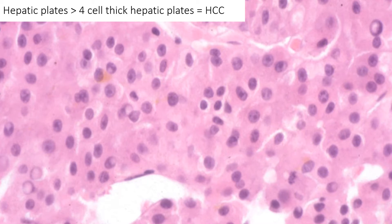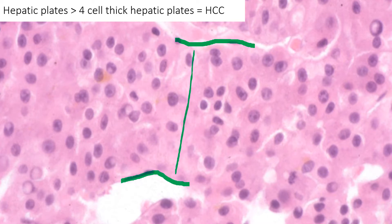The question is, how do you measure the thickness of a plate? You do it by endothelial wrapping. There's endothelial wrapping there — that's the endothelial cell, and that defines the thickness of your plate. Counting: one, two, three, four, five. This is hepatocellular carcinoma. Easy.